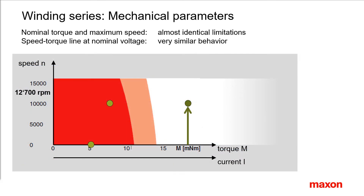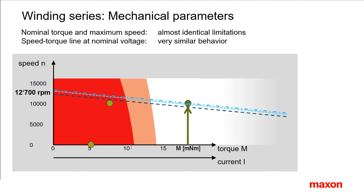Here is a graphical representation of the windings from the previous slide. The operating range diagram of one winding can stand for the full winding series. The speed-torque lines lie in a narrow band. This is how the nominal voltages are assigned.